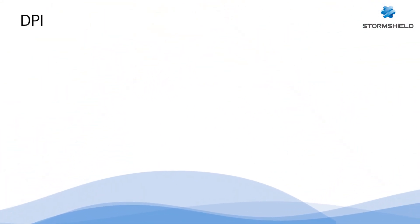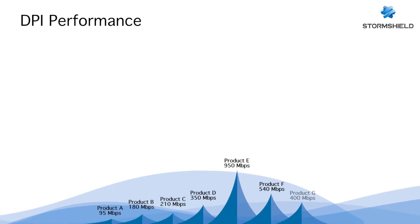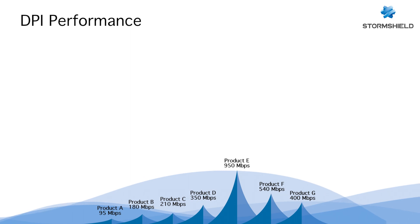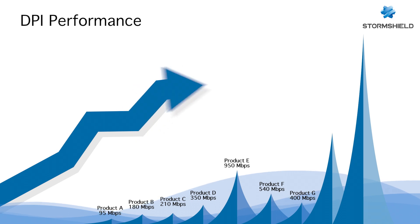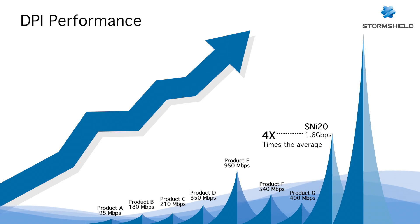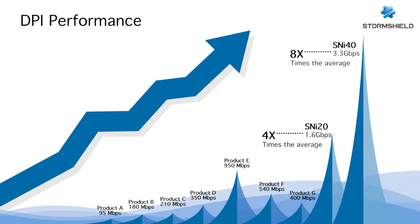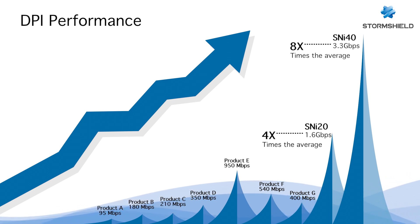The average DPI throughput in the rugged firewall market is close to 400 Mbps. StormShield's two rugged models, the SNI-20 and SNI-40, provide the highest DPI throughput in their class: the SNI-20 at 1.6 Gbps — four times the average — and the SNI-40 at 3.3 Gbps — eight times the average. At a cost-effective price, the ROI with StormShield Next Generation Firewall is the highest in the market considering DPI throughput.